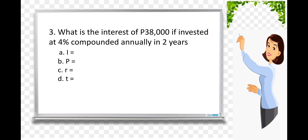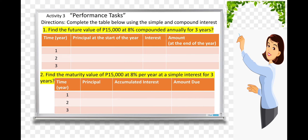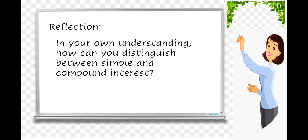For number 2, you're going to find the rate, principal, interest, and time. Same with number 3, find the interest, principal, rate, and time. For Activity 3, the performance task, you're going to complete the table using simple and compound interest. Number 1: find the future value of 15,000 at 8% compounded annually for 3 years. Number 2: find the maturity value of 15,000 at 8% per year at simple interest for 3 years.